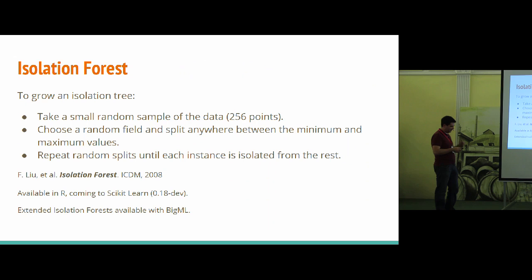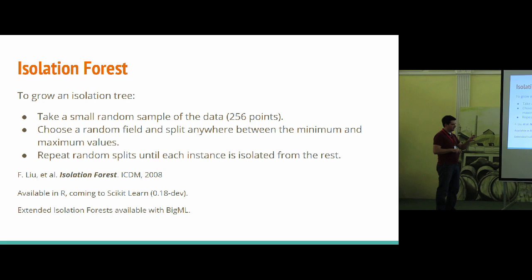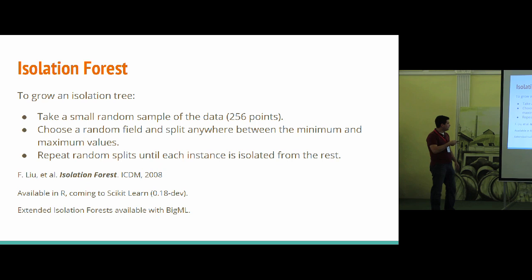There's also the isolation forest — newer than some of the others but no longer brand new. It's available in R and in a development branch of scikit-learn, and it's also the method we built into BigML with some extensions. The basic idea: take a small sample from the dataset — 256 points — then choose a random field, look at its minimum and maximum value, and make a random split in between. Grow the tree by repeating that over and over until every point is isolated into a leaf node.